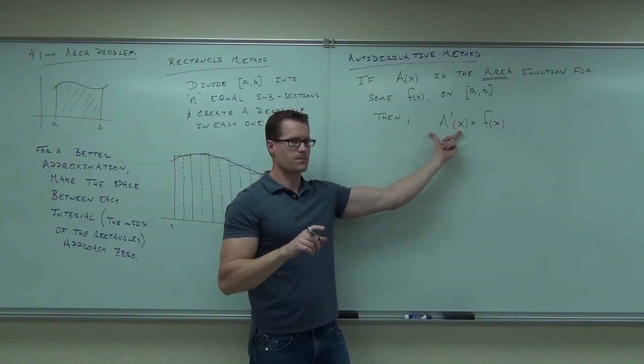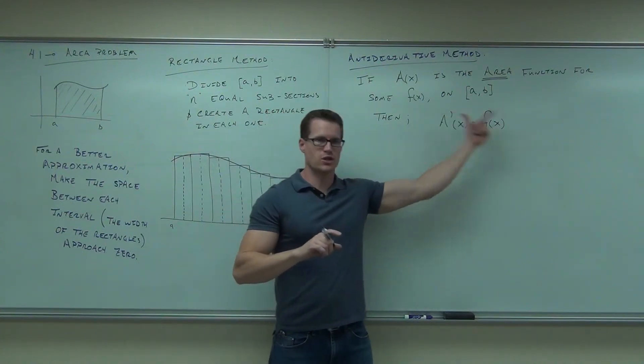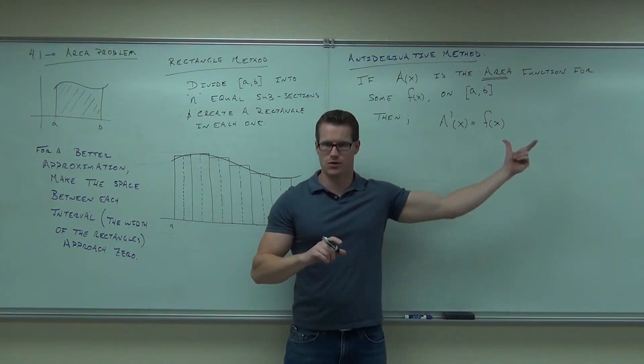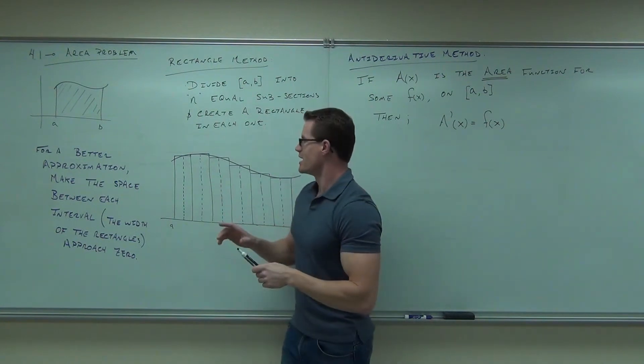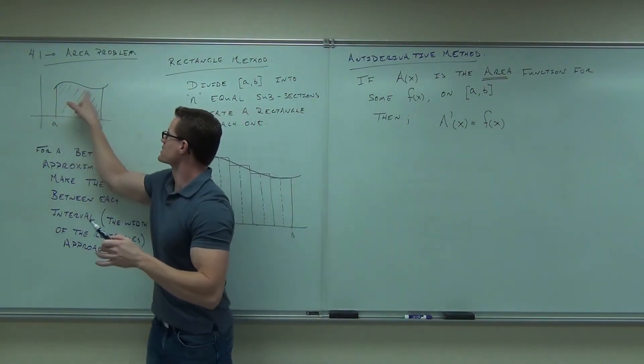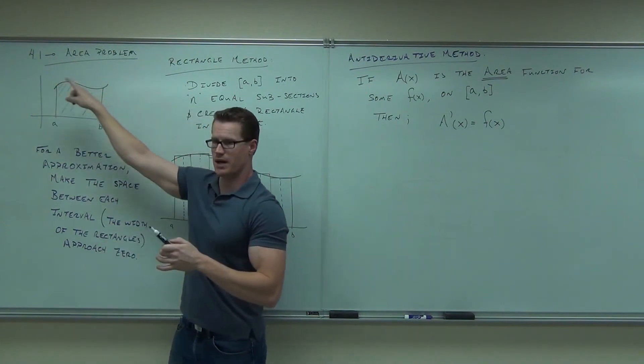The derivative of your area function will give you your original function. It will give you the line, the curve. So basically it says this: if your area function represents the area, take a derivative and you get the function back.